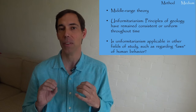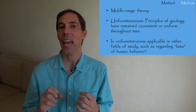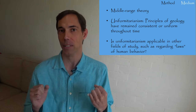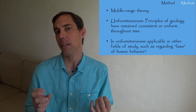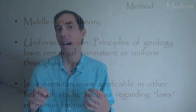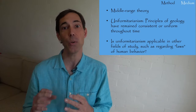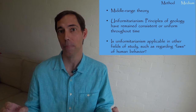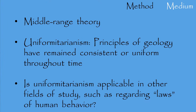A middle order of theory sometimes is called middle range theory. It has a long tradition in the philosophy of science in general and in archaeology specifically. You can begin to think about middle range theory by looking at the principle of uniformitarianism, telling us that geological laws and principles have always been the same, unchanging and uniform throughout time. Working from this premise, middle range research then asks if uniform laws or principles could exist in other fields outside geology, such as in social or behavioral studies.